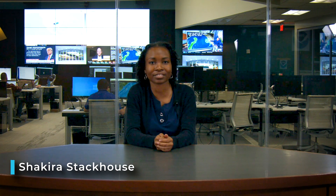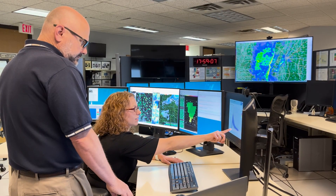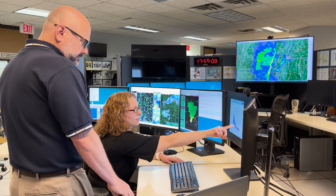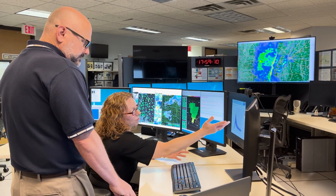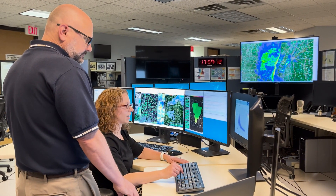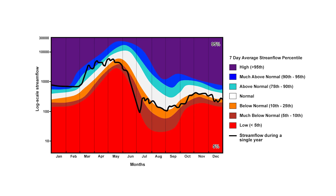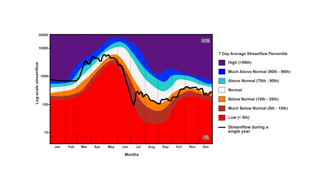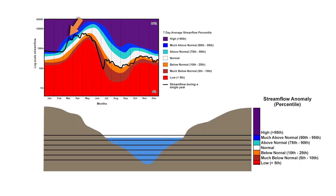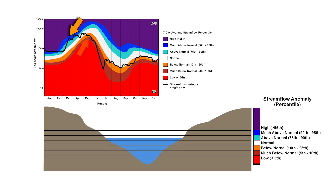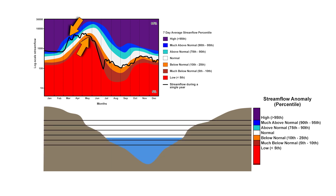The streamflow anomaly analysis should often be used in conjunction with other information, tools, or services to gain a complete understanding of current streamflow conditions. For example, since streamflow percentile ranges can change across the year, above normal or below normal streamflow anomalies may correspond with similar streamflows at different times of the year.